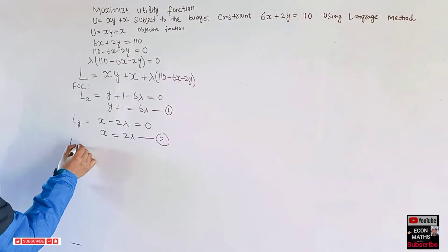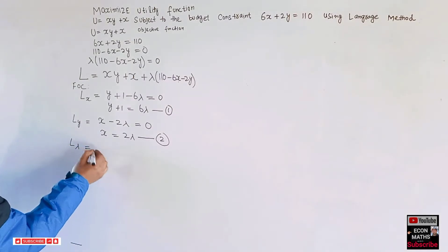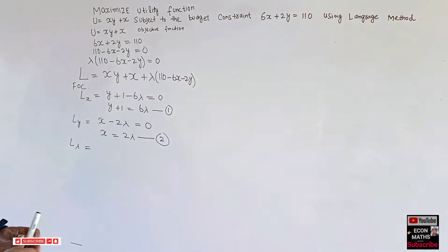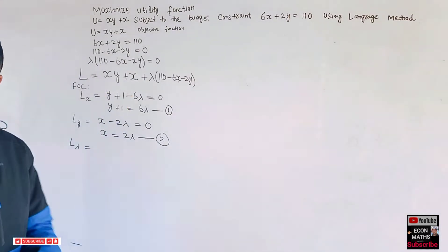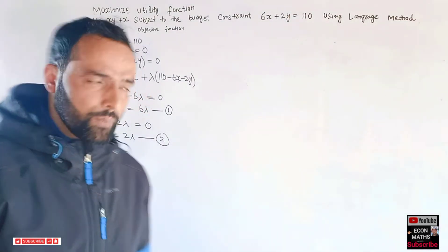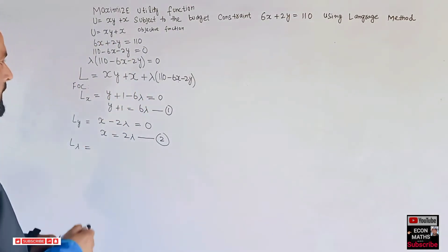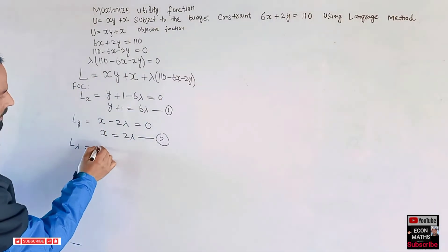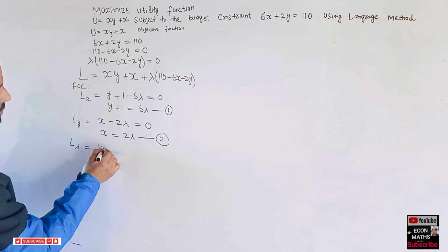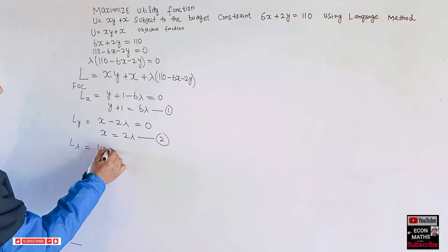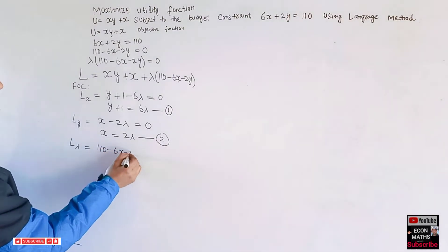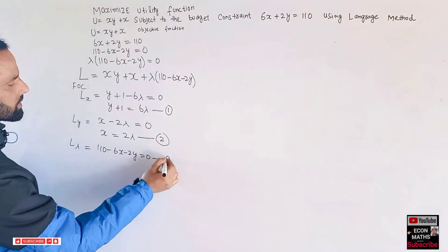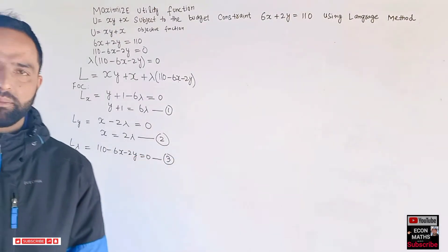Partially differentiating with respect to lambda: no lambda is involved in the first two terms, so their derivative is zero. The derivative of lambda gives 1, leaving us with 110 - 6x - 2y = 0. Let this be equation three.